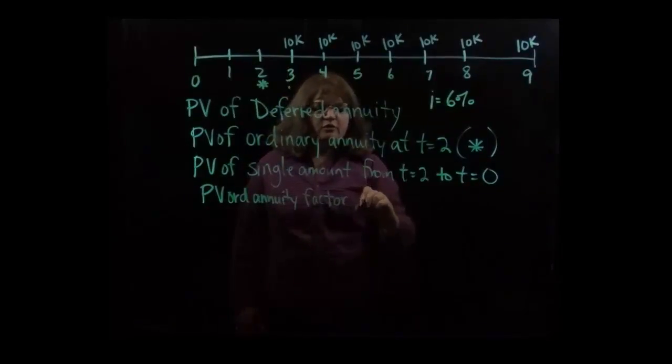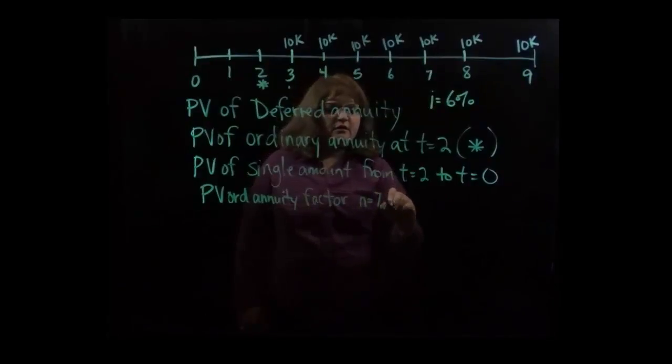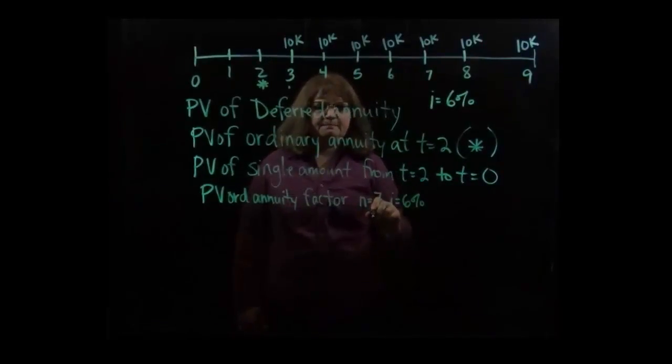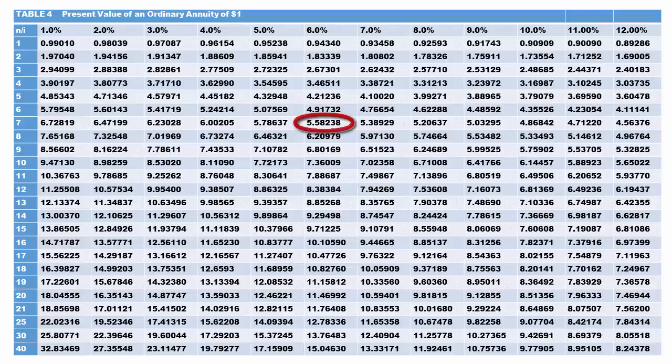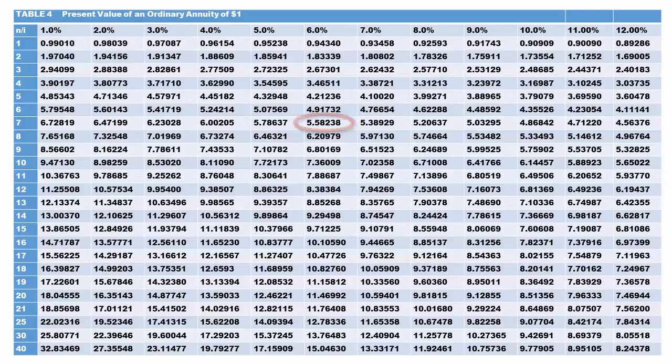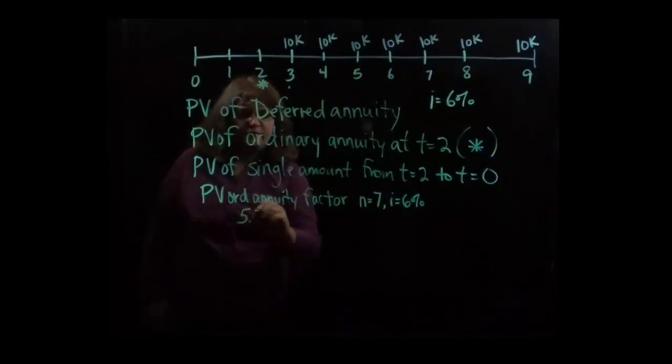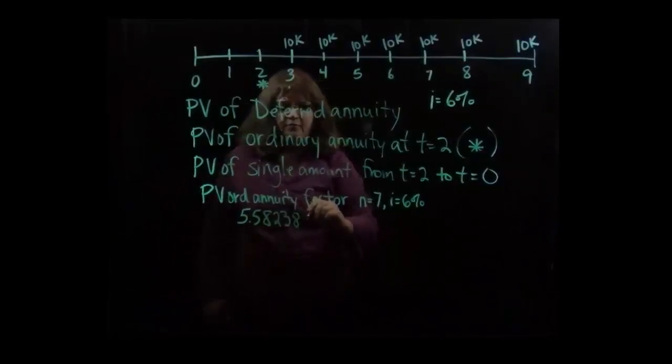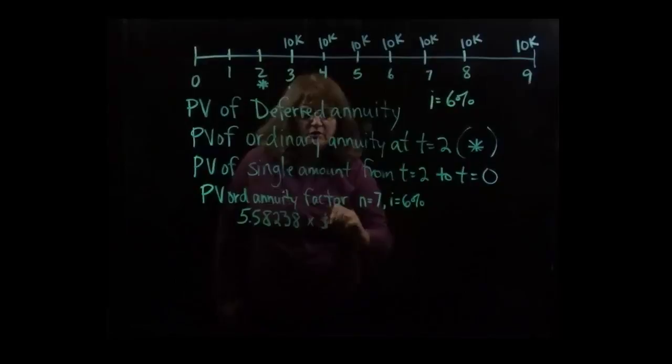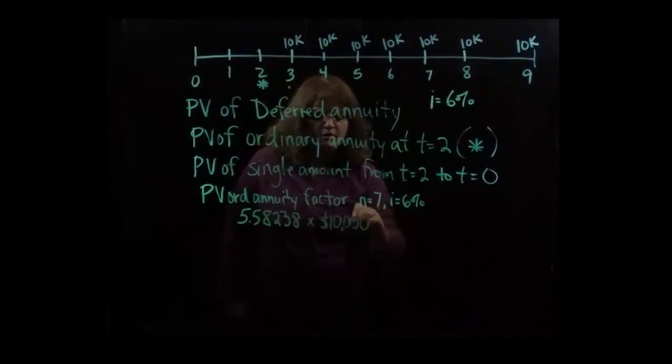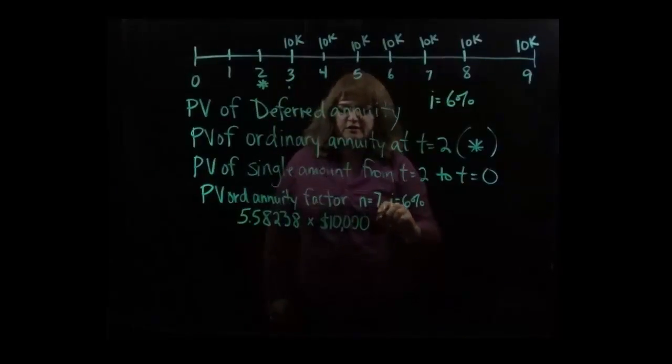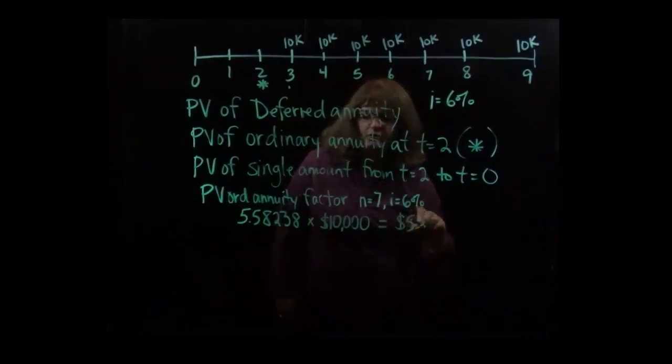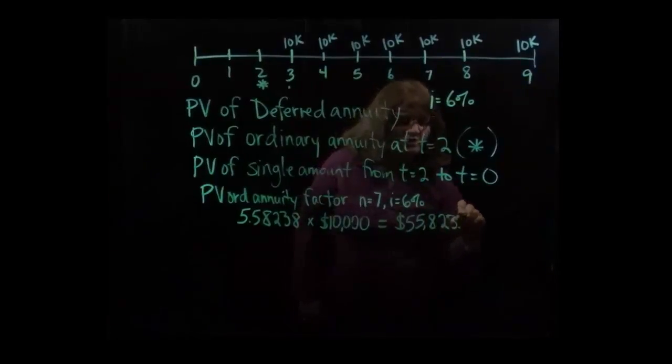And we're wanting the factor where the n equals seven and i equals six percent. So see if you can find that factor where those two things intersect. As you can see from the table, that factor is 5.58238. If we then multiply that by the ten thousand dollars that we'll be paying each year for those seven periods, that gives us $55,823.80.